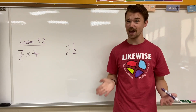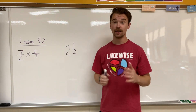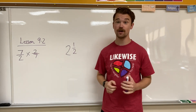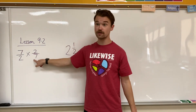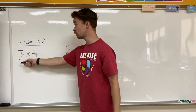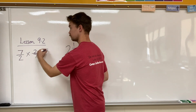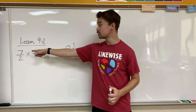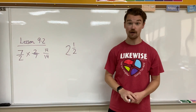Reciprocals have a special definition, meaning that if we have a fraction, we multiply it times something to equal one. Usually you flip the numerator and the denominator of a fraction to find the reciprocal. For example, I have 7 over 2. The reciprocal of 7 over 2 would be 2 over 7. If I multiply 7 over 2 times 2 over 7, I should get the answer of 1. 7 times 2 is 14, and 2 times 7 is 14. 14 over 14 equals 1, which means 7 over 2 times 2 over 7 — those two fractions are reciprocals of one another.